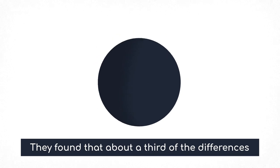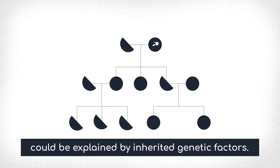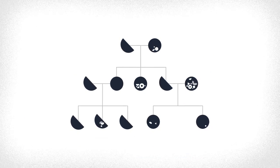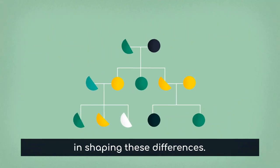They found that about a third of the differences between people in their sexual behavior could be explained by inherited genetic factors. But the environment also plays a large role in shaping these differences.